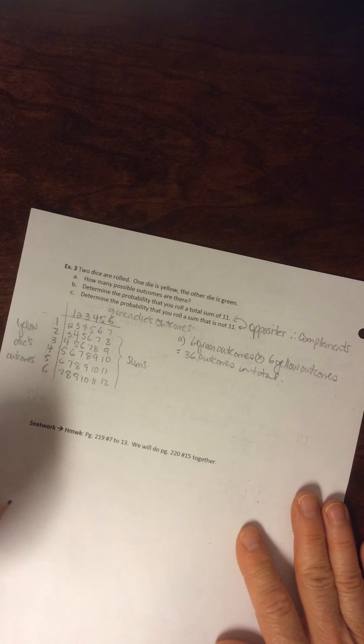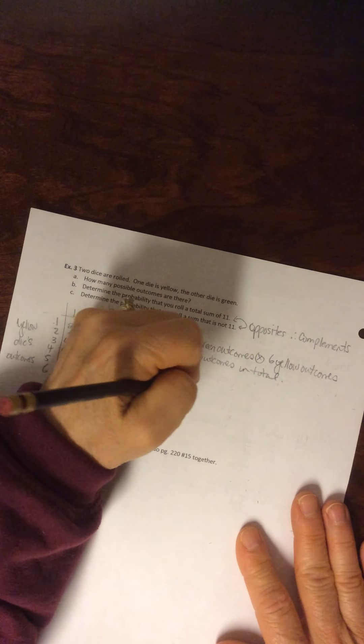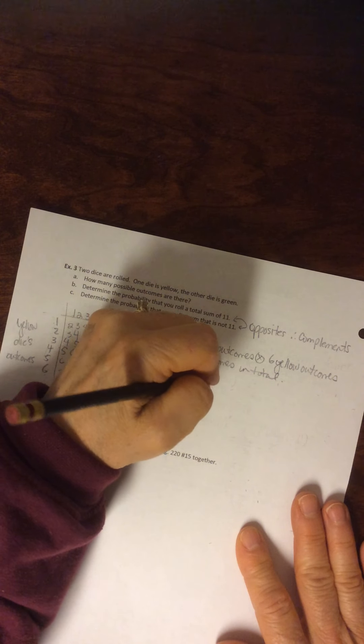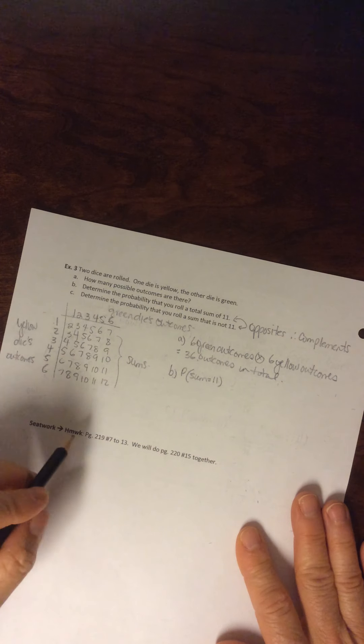B, determine the probability that you roll a total sum of 11. So you want the total sum to be 11. All right, so where are the 11s?